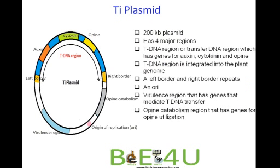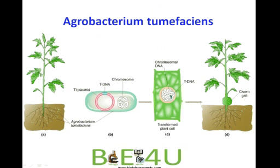In this association, the advantage to Agrobacterium is that it integrates the T-DNA region into the plant genome so that the plant will synthesize opines — nutrients required for Agrobacterium growth. During infection, Agrobacterium tumefaciens enters at a wound site, the T-DNA portion of the Ti plasmid gets transferred and integrated into the plant genome, causing cell proliferation and crown gall formation, where all cells synthesize opines as food for the bacteria.